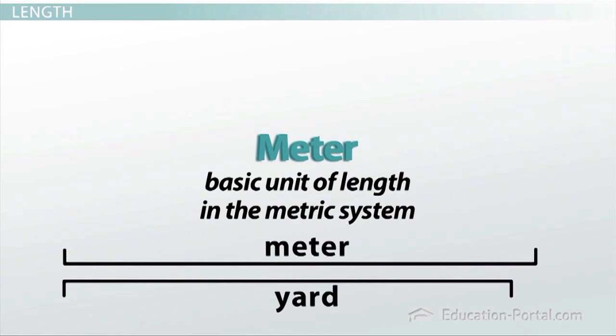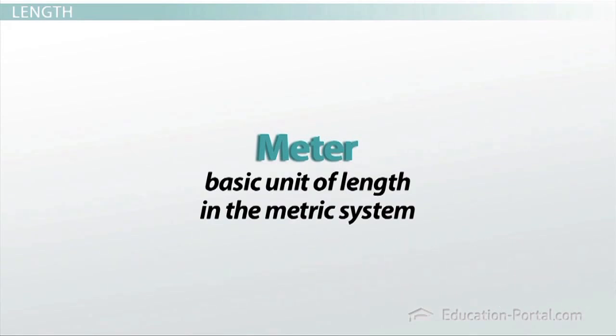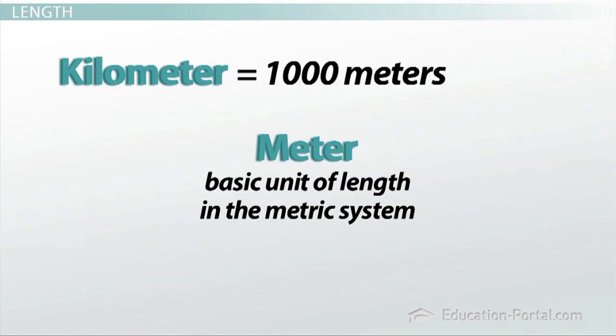For distances much longer than a meter, you would add the prefix kilo to make the measurement kilometer. A kilometer is the metric version of our mile, even though it is a bit shorter than our mile. A kilometer is equivalent to exactly 1,000 meters.